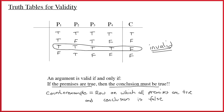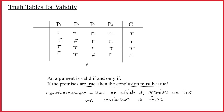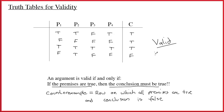Looking at another example: the second row has all premises false and conclusion true — that doesn't interest us. The third row has all premises true and conclusion true — not especially interesting either. What's interesting is there's no counterexample anywhere. Because there's no counterexample, we say it's valid. The argument is valid not because of any particular row, but because there is no counterexample.